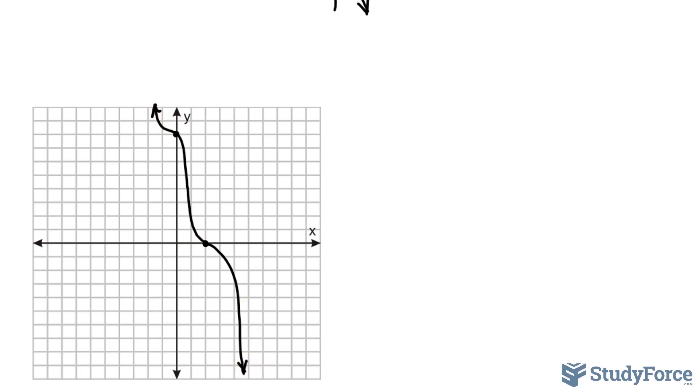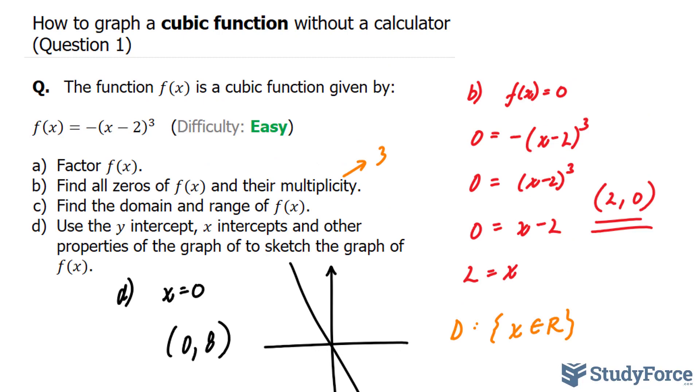Being negative means that it starts at the top left corner. So I'll put arrows here and here. And this sketch represents a graph of a cubic function. Make sure that you watch question 2, which is a more difficult example.